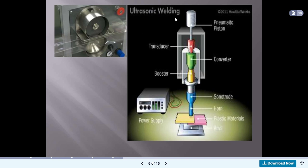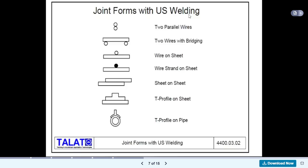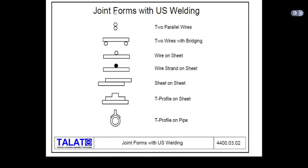Here is the schematic diagram of the ultrasonic welding machine. It includes a pneumatic piston to which electrical supply is provided, and the key equipment components: transducer, converter, booster, sonotrode, and horns. These are the main equipment used for ultrasonic welding.